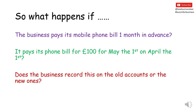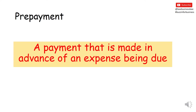Here is another example. What's going to happen if the business pays its mobile phone bill one month in advance, which is typically the case? The business pays for May's phone bill on the 1st of April, but it isn't going to use that phone until the 1st of May, and that's a £100 bill. Where does the business record this transaction, because it's actually paying for something not yet used? Well, that's called a prepayment — a payment made in advance of the expense being due.